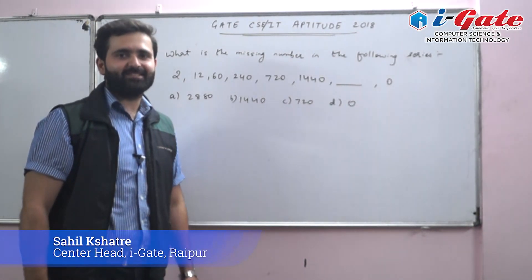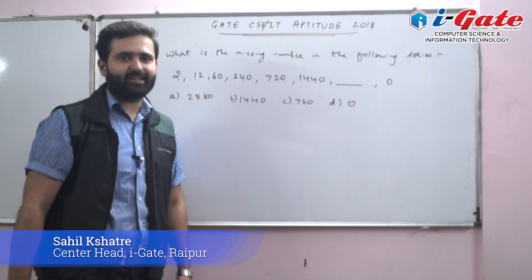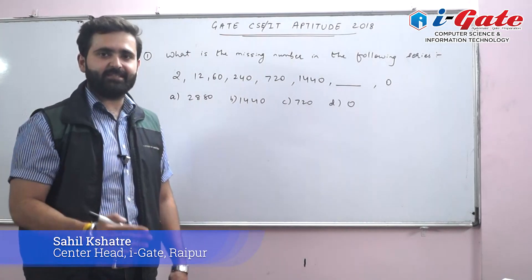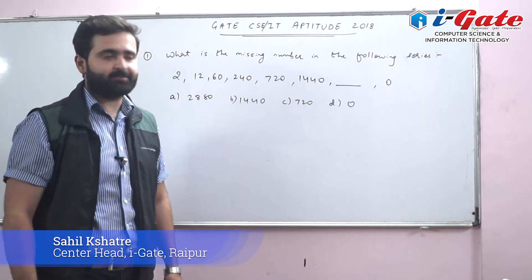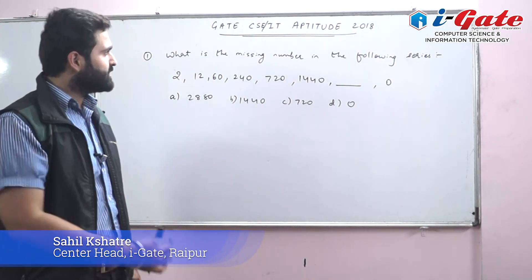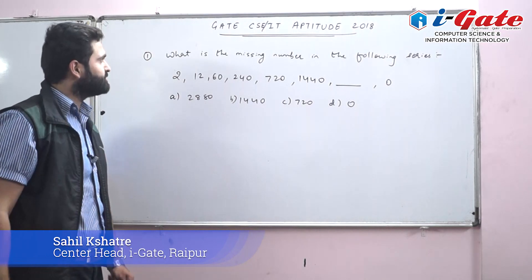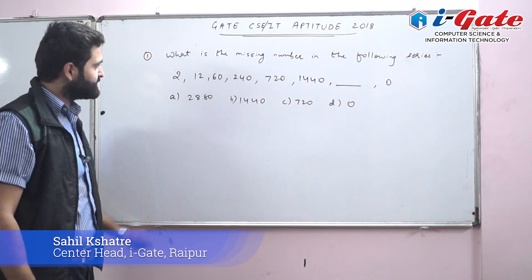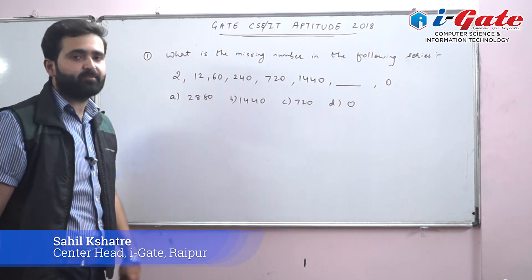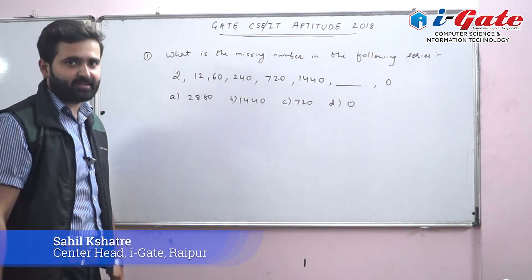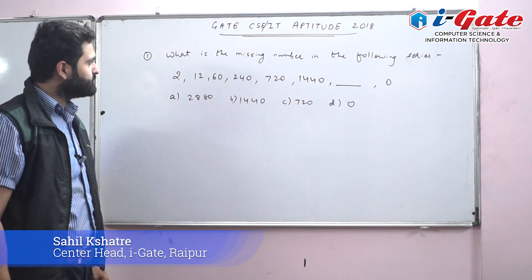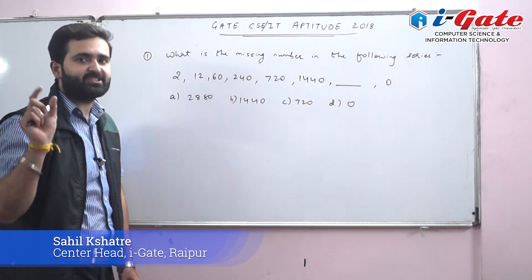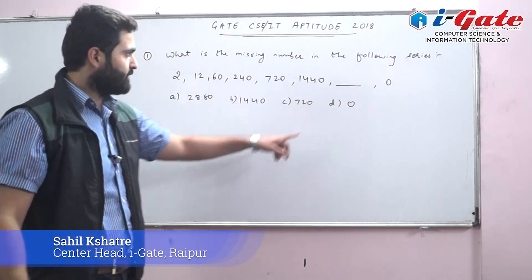Hello everyone, I'm Sahil Chhatre from iGate. Today I am covering the aptitude section of the GATE CSE IT 2018 question paper. The first question asks for the missing term in the following series: 2, 12, 60, 247, 214, 40, dash, 1000.